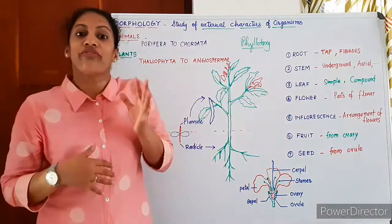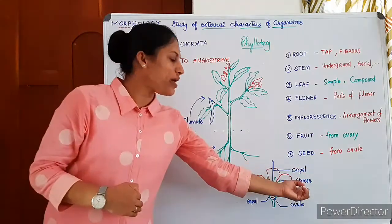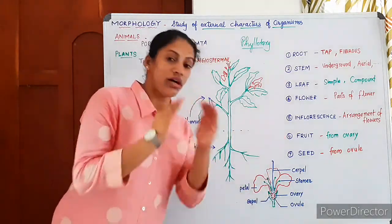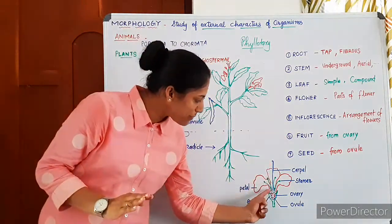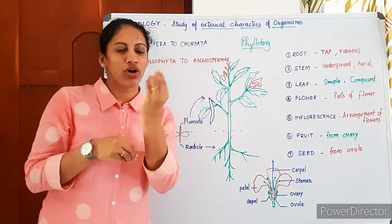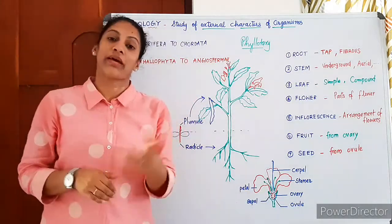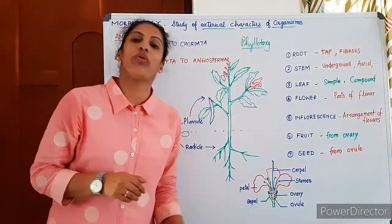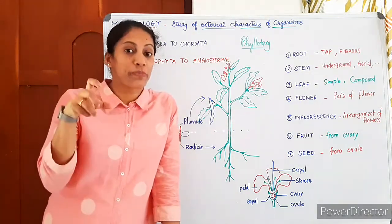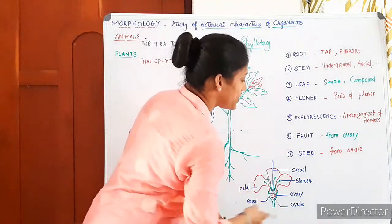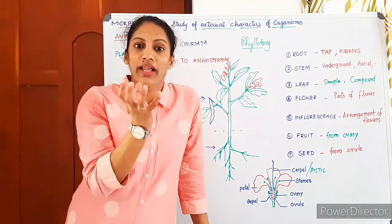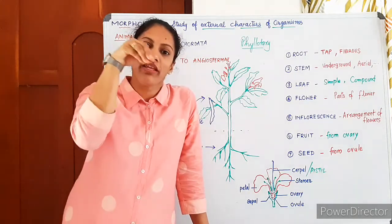The two important whorls in a flower are the male part and the female part. The male part is the stamen and the female part is the carpel. The carpel has a basal bulged portion called the ovary, which consists of small globular structures called ovules — sometimes one, sometimes many ovules are present inside the ovary.